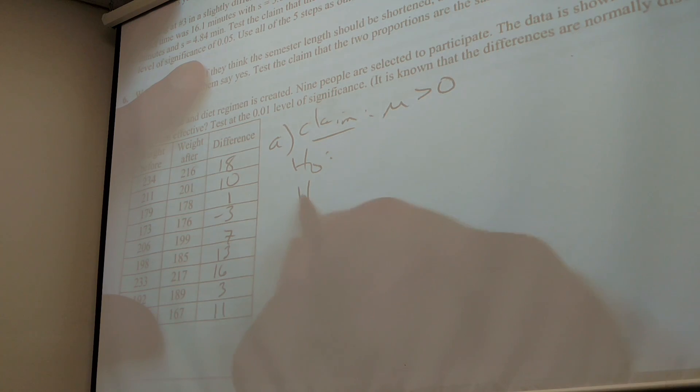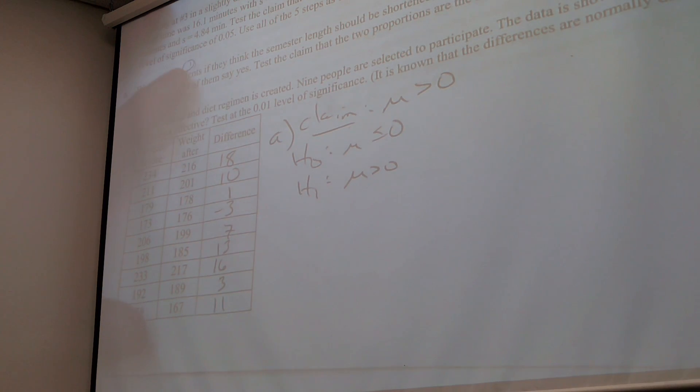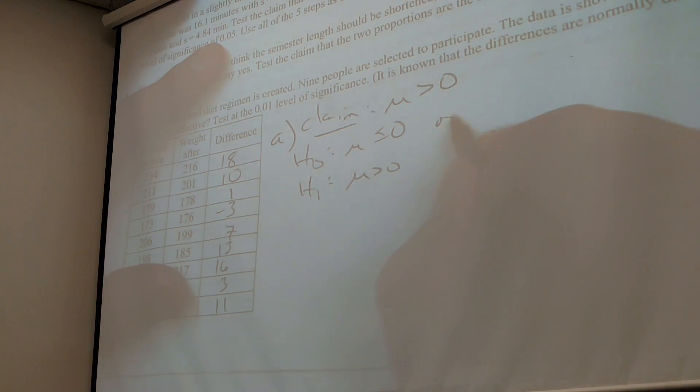So the claim should be that my mean weight loss is greater than 0. So then which one's that going to be? My high. So the null would be less than or equal to 0. Good. That's what I'm fighting against. I don't want people to gain weight or to not lose any weight. I want them to have lost weight. So it is a one tail test.